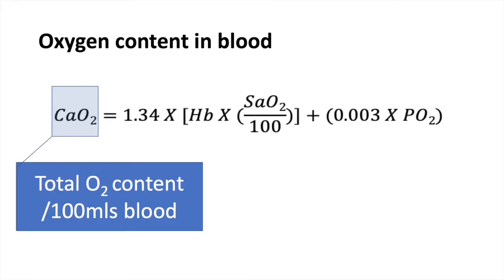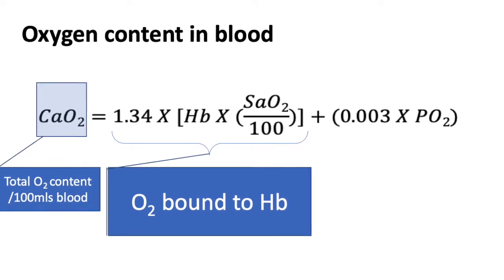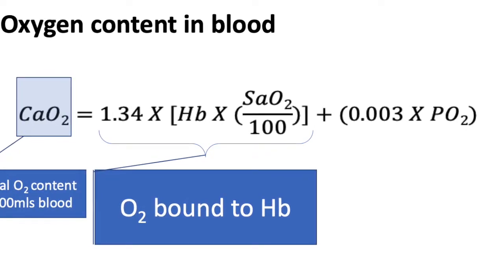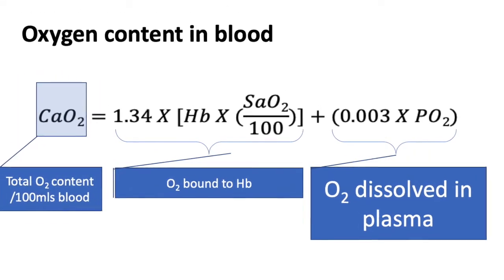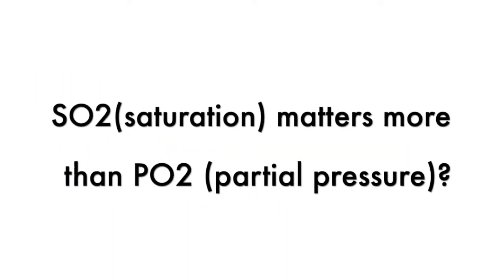Can you explain the oxygen contents of blood? This equation summarizes how oxygen is carried in blood. CO2 refers to total oxygen content per 100 mL of blood. Oxygen is carried both in the bound form and in the dissolved form.